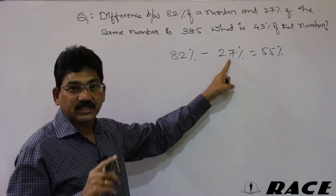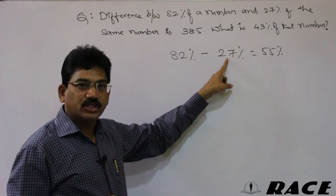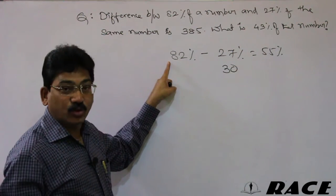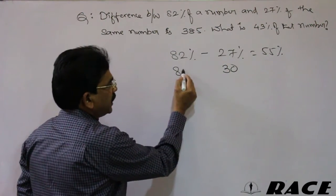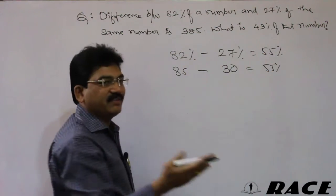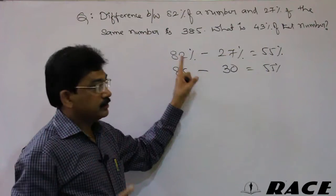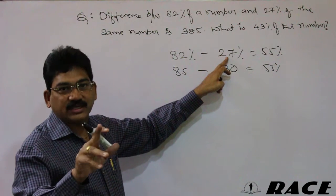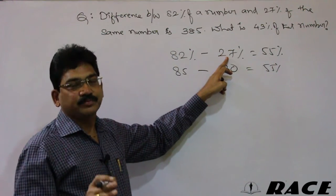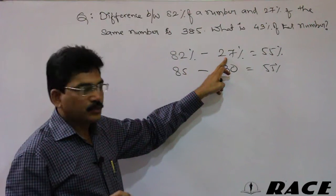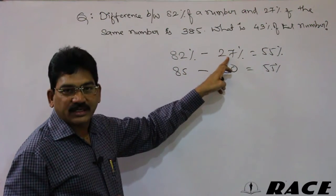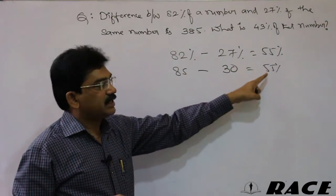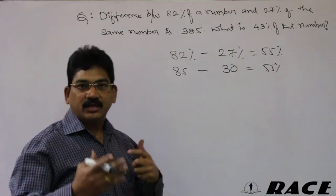Detecting round figures is always easy. Here, subtracting 27 from 82 is difficult, but if you add 3 to 27 to make it 30, you must also add 3 to 82 to make it 85. Then 85 minus 30 is 55 — quite easy. Whatever you add or subtract to one figure, do the same to the other.